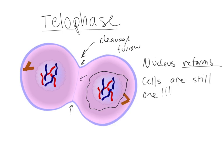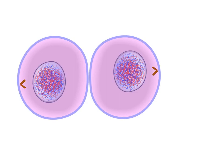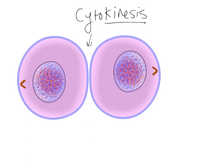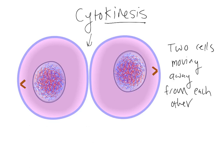The actual separation of the cells has its own special name: cytokinesis. Here you can see there is a gap between the cells and the cell membrane is completely reformed around both. Cytokinesis — 'cyto' for cell, 'kinesis' think kinetic energy, movement — is the two cells moving away from each other. Each of these cells is going to have a full 46 chromosomes for a human being, so the full somatic amount of DNA will be in each cell.